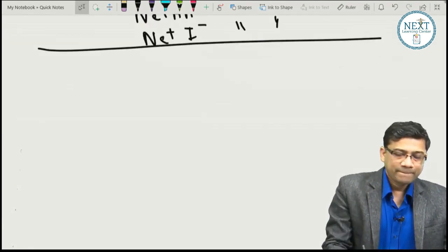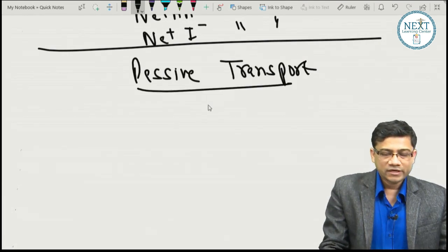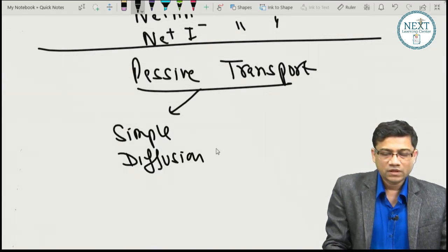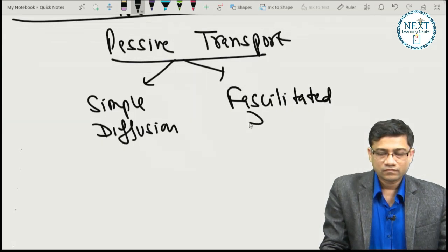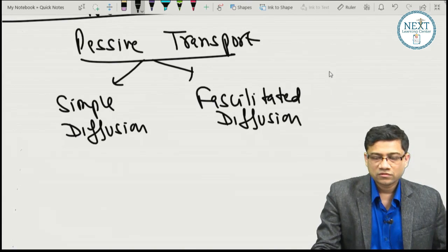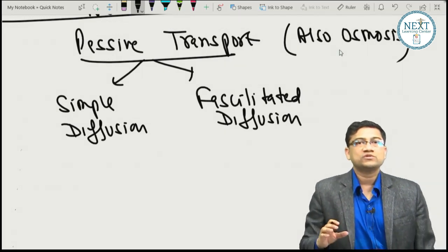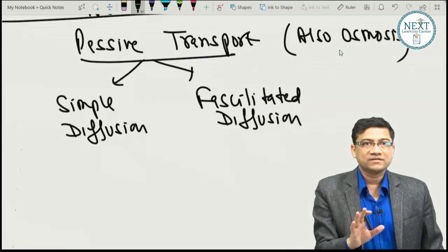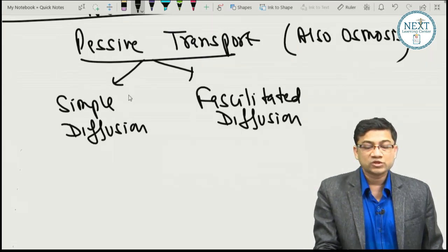Passive transport includes simple diffusion, facilitated diffusion, and osmosis. Osmosis is water (solvent) movement, while simple and facilitated diffusion involve solute movement. Simple diffusion requires no carrier — oxygen and CO2 cross the respiratory membrane directly. Facilitated diffusion uses carriers or transporters to increase the rate of diffusion, but movement is still along the gradient, requiring no ATP.